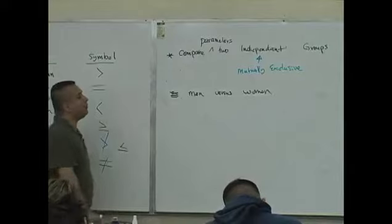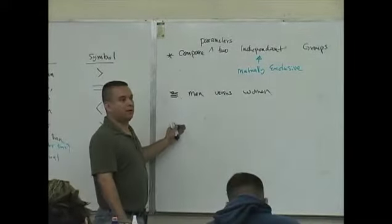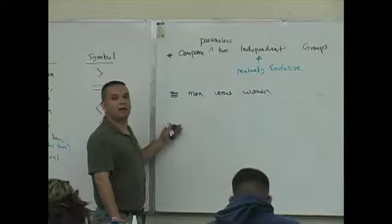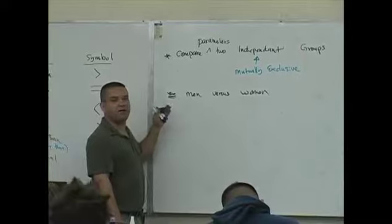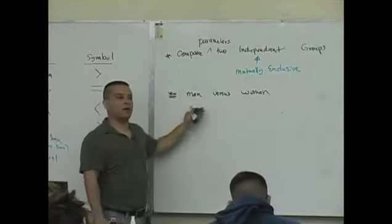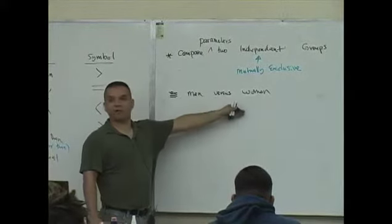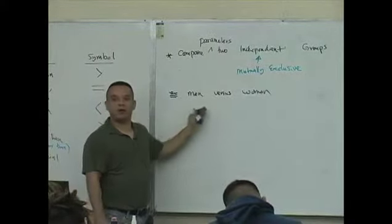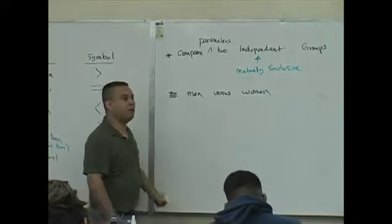We're going to compare parameters about men versus women. Something simple like, for example, the average age of a lifespan of a male, or the lifespan of a male versus the lifespan of a female. Meaning, what's the average age of a male when he dies versus the average age of a woman when she dies? Those comparisons can be used to indicate who lives longer.